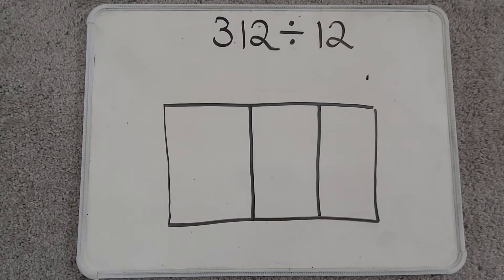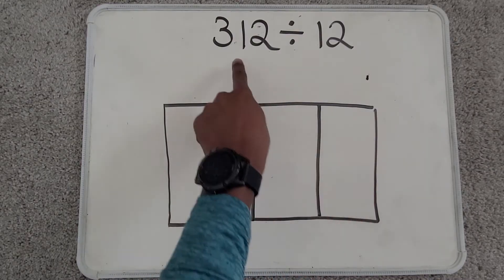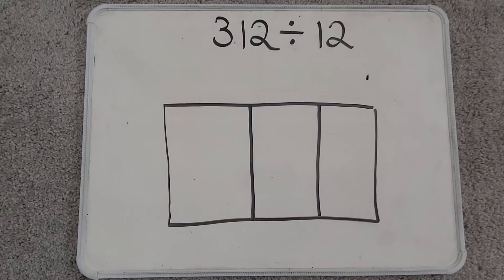Hi. Today we'll be reviewing the area model for division. The concept that we'll be using today is that we'll be subtracting the area of each box from my dividend. Let's get started.